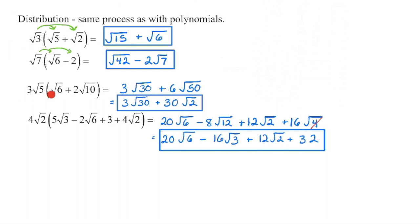3 times 1 is 3, and 5 times 6 is 30. Distributing into the second term: 3 times 2 is 6, and 5 times 10 is 50. Pull out a 25 — the square root of 25 is 5, so 5 times 6 is 30, and we're left with the 2 in the radicand.